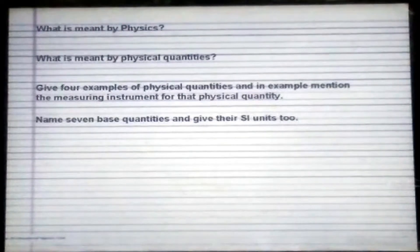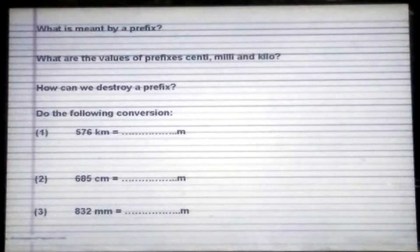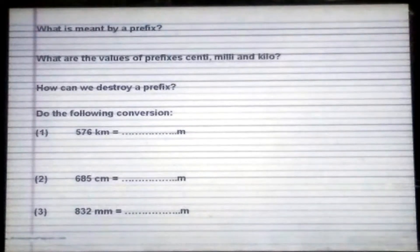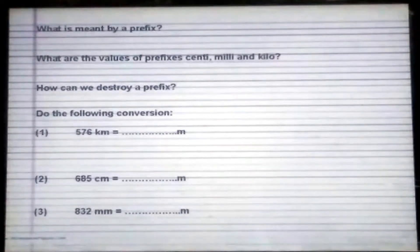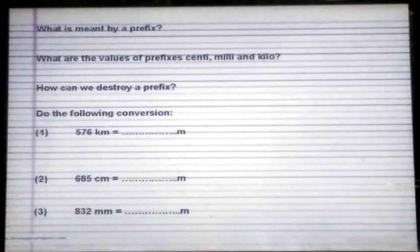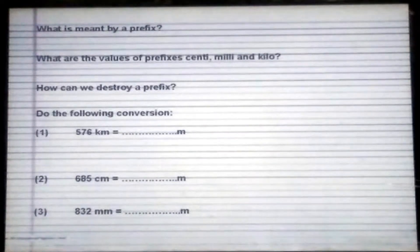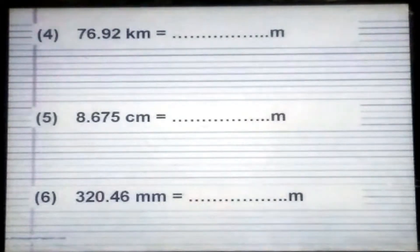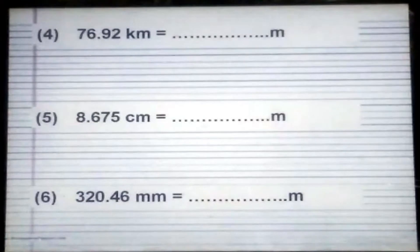Then 7 base quantities and the SI units to be written in your copies. What is meant by prefix? What are the values of prefixes centi, milli and kilo? How can we destroy a prefix? I have taught you these things in lesson number 1 video, so please watch that video again carefully and understand the concept. Apply the understood concept on your copies so you can check your skills. Then you have to do the conversions. Three conversions are explained in that video: Number 1, 576 kilometers equal to dash meters. Number 2, 685 centimeters equal to how many meters. Number 3, 832 millimeters equal to how many meters. And three unseen questions for you. These questions are not explained in that video, but if you have understood the concept of destroying a prefix very clearly, then there is no problem for you inshallah.